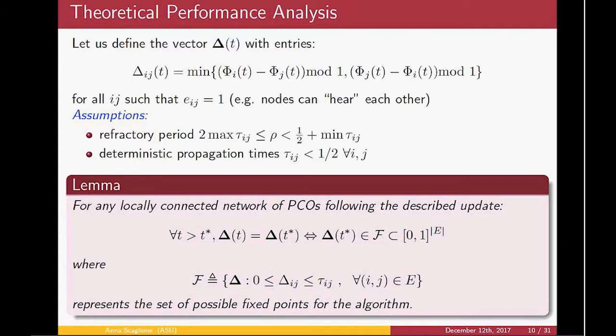The way we analyze the performance—this is the source of the main lemma that allowed us to characterize the accuracy—is by studying the evolution of an auxiliary variable, a vector which has as many entries as the edges in the network. The entries of this vector are always the minimum difference between the phase of node i or node j (mod 1) or the phase of node j minus the phase of node i (mod 1). Essentially, this is the spacing, the minimum spacing between two clocks. The assumption for our lemma is that the refractory period has to be greater than twice the maximum delay but also less than half of a cycle plus the minimum delay, and all the propagation delays have to be strictly less than one half.